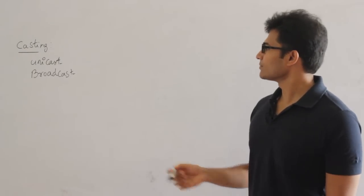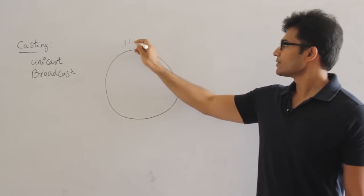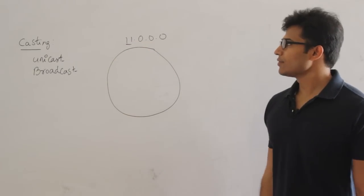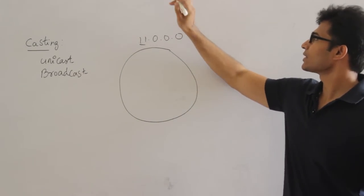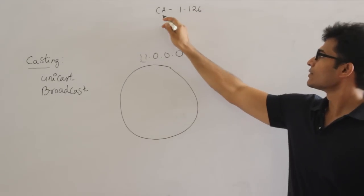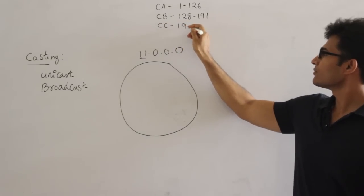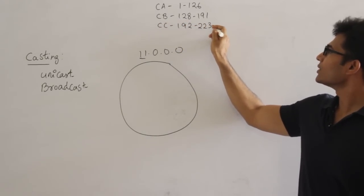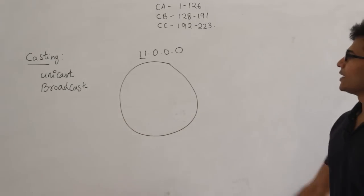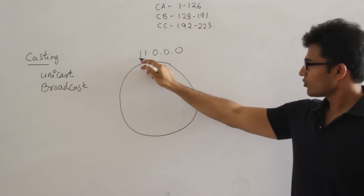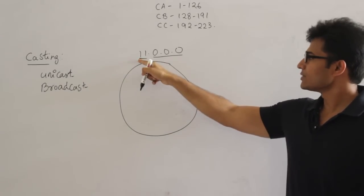Let's see unicasting. Say there is a network with network address 11.0.0.0. The number 11 tells us the class — Class A ranges from 1 to 126, Class B from 128 to 191, and Class C from 192 to 223. Since 11 belongs to Class A, the network ID is the first 8 bits and the host ID is the following 24 bits.